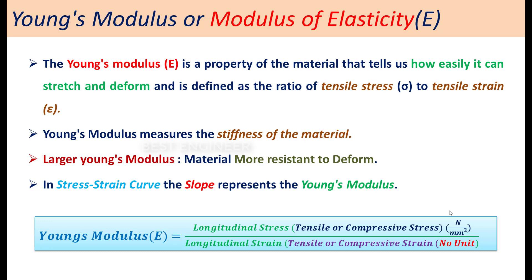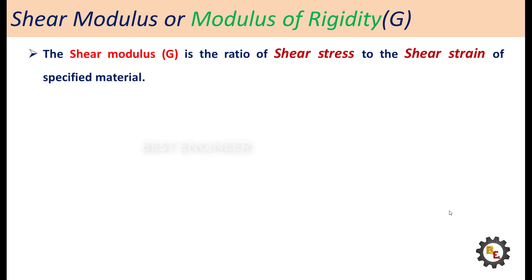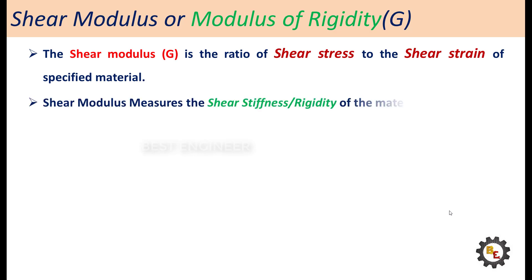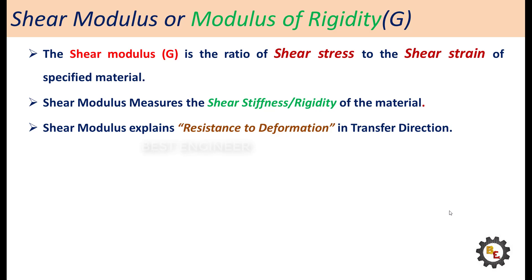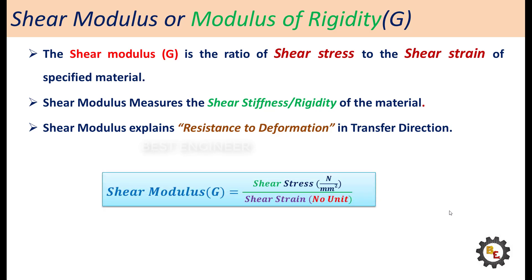Next, shear modulus, or modulus of rigidity. The shear modulus G is the ratio of shear stress to the shear strain of a specified material. Shear modulus measures the shear stiffness or rigidity of the material. Shear modulus explains a material's resistance to deformation in the transverse direction. The unit of modulus of rigidity is newton per square millimeter.